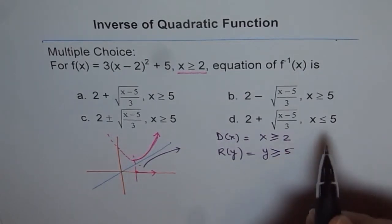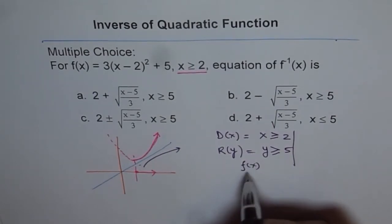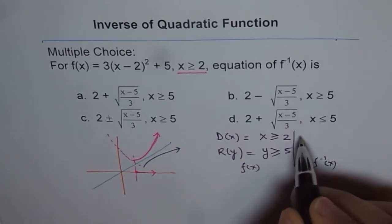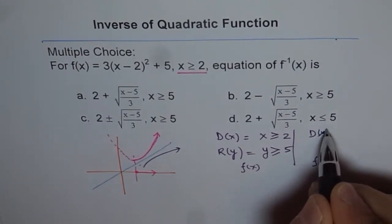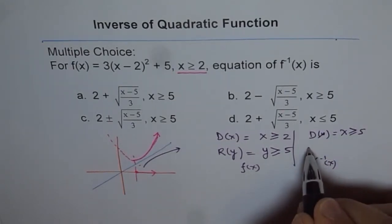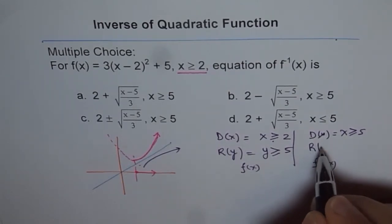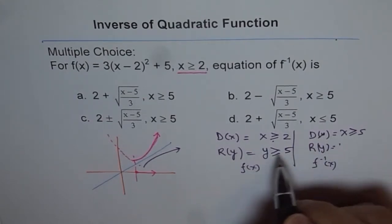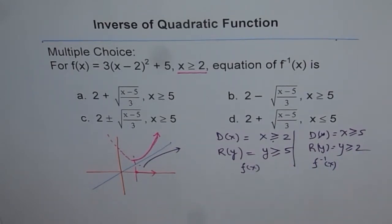Now, when we are talking about inverse of a function, this is what we are talking about is f(x). And now, how about f inverse x? It has to switch. So the domain now will be equals to x greater than or equal to 5, and range will become this. Range of this function is y greater than or equal to 2.